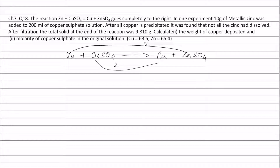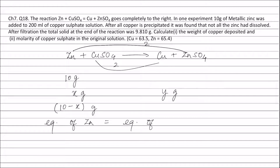According to the question, the weight of zinc is 10 grams. Let the weight of zinc which reacted with copper sulphate be x grams and weight of copper deposited be y grams. The weight of zinc left at the end of the reaction is 10 minus x grams. Now, equivalence of zinc will be equal to equivalence of copper.